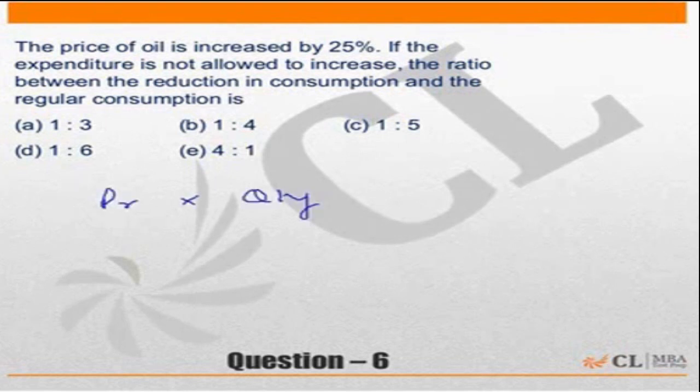Price into quantity is equal to expenditure, or in this case we can call it consumption. So price into consumption or price into quantity is equal to expenditure. Price of oil increased by 25 percent, so price becomes 5 by 4 times.